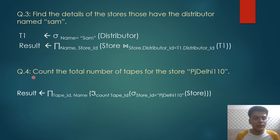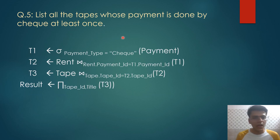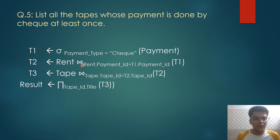Relational query 4 counts the total number of tapes for store PJ Dally 110 — that is the store ID. From store we extract store ID where PJ Dally 110, then use aggregate function count on tape IDs to count the total number of tapes, extracting tape ID and name. Relational query 5 lists all tapes whose payment is done by check at least once: from relation payment we extract tuples where payment type equals check into T1, then join with rent on payment ID, then join with tape on tape ID, extracting tape ID and title.